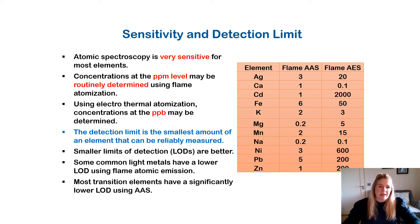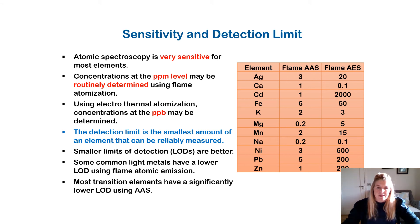Why are we using AAS? We're looking for sensitivity to perform trace analysis and trace metal analysis. Atomic spectroscopy is a very sensitive technique for most elements. Concentrations at parts per million level may be routinely determined using flame atomization. Using electrothermal atomization or the graphite furnace, concentrations can go down as far as parts per billion — that is nanograms per litre compared to micrograms per litre. If you want to get down to lower levels, you need to use the graphite furnace.